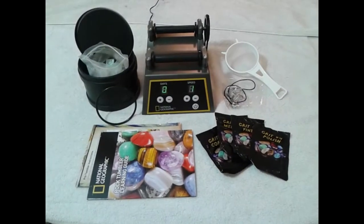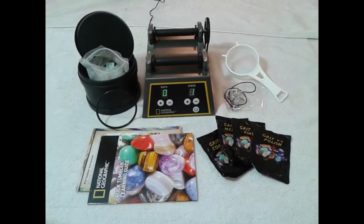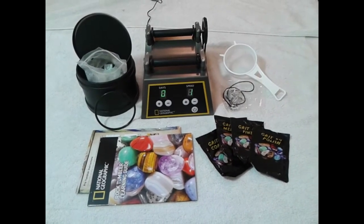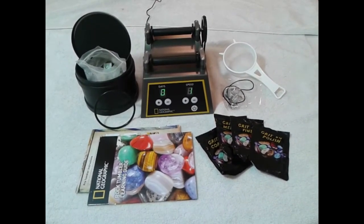Hi everybody, Basso Kantor here, and today we're taking a look at this National Geographic rock tumbler. There's quite a lot of things that come in the kit, just like you see right here.